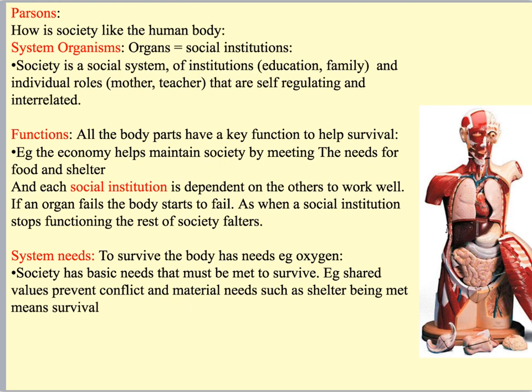How is society like the human body? According to Parsons, he talked about three different areas. First, system organisms — he compared organs to social institutions. He argued that society is a social system of institutions: education, family, religion, work, and individual roles — for example, mother, teacher, friend, daughter. All of these institutions and roles are self-regulating and interrelated, just like organs in the human body are self-regulating but also interrelated with each other.